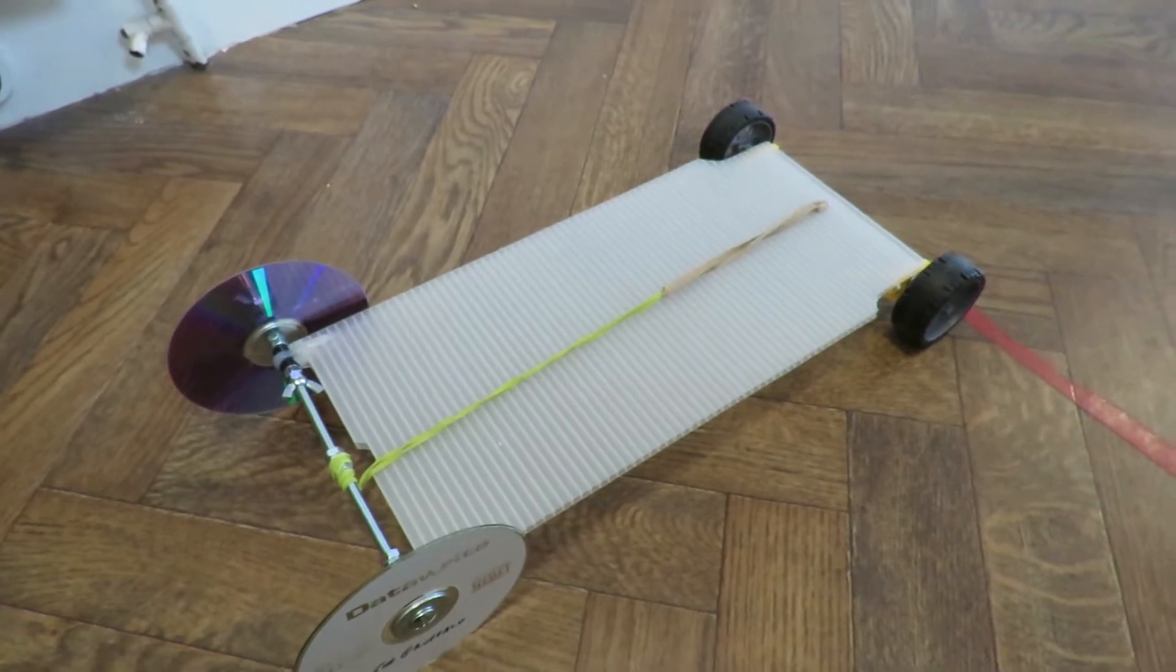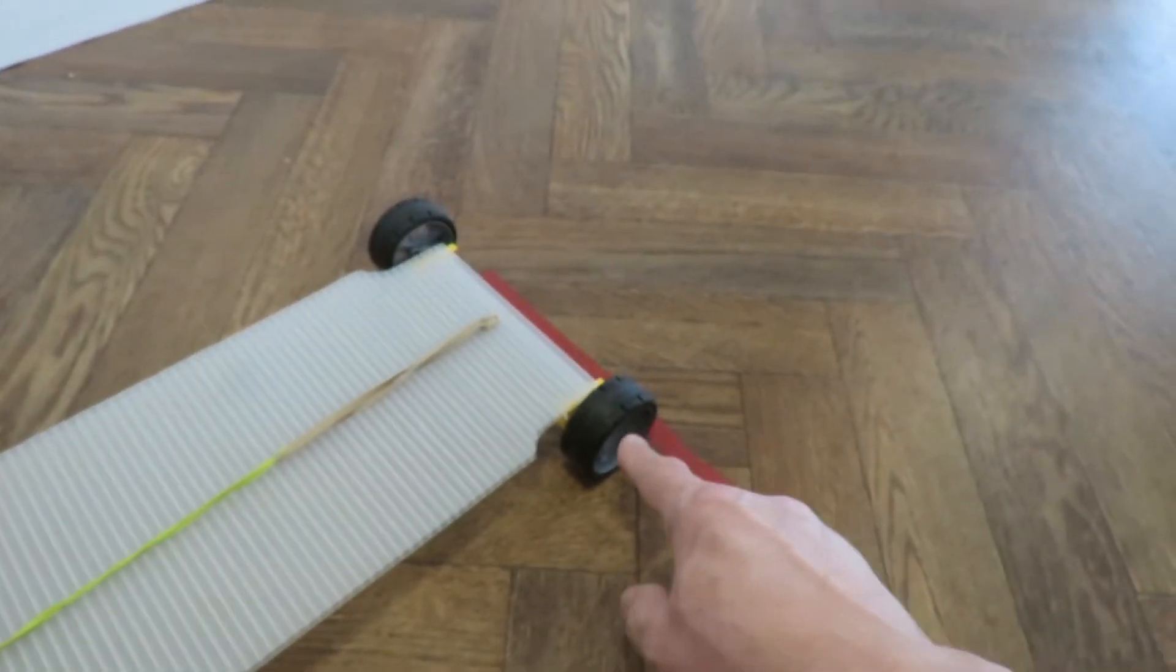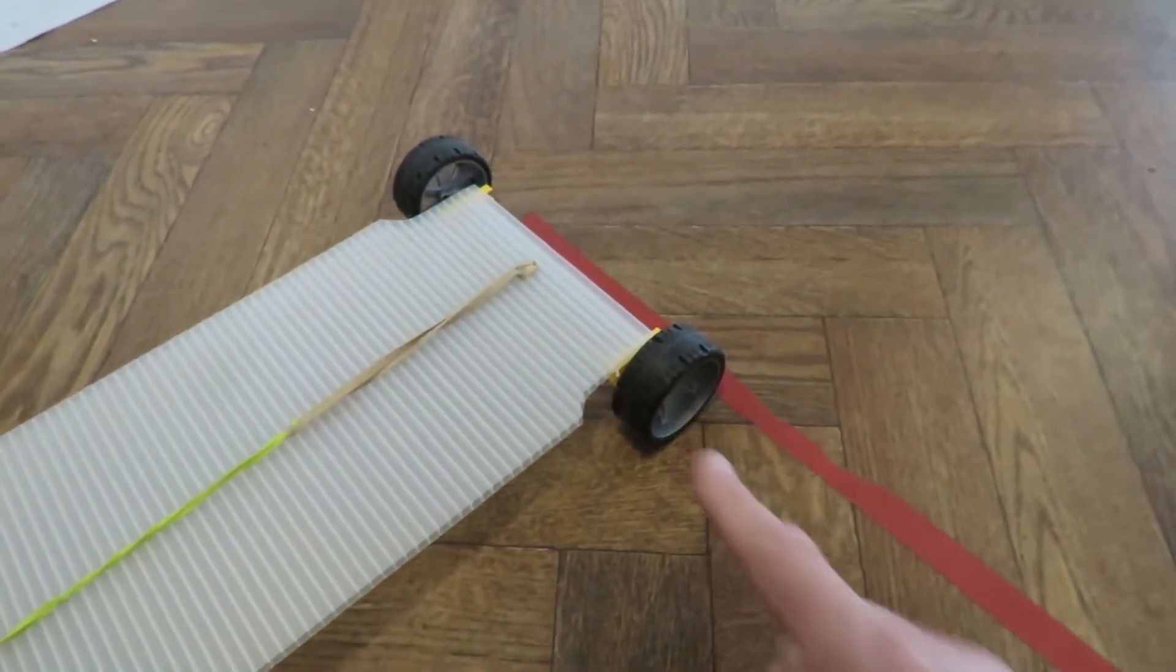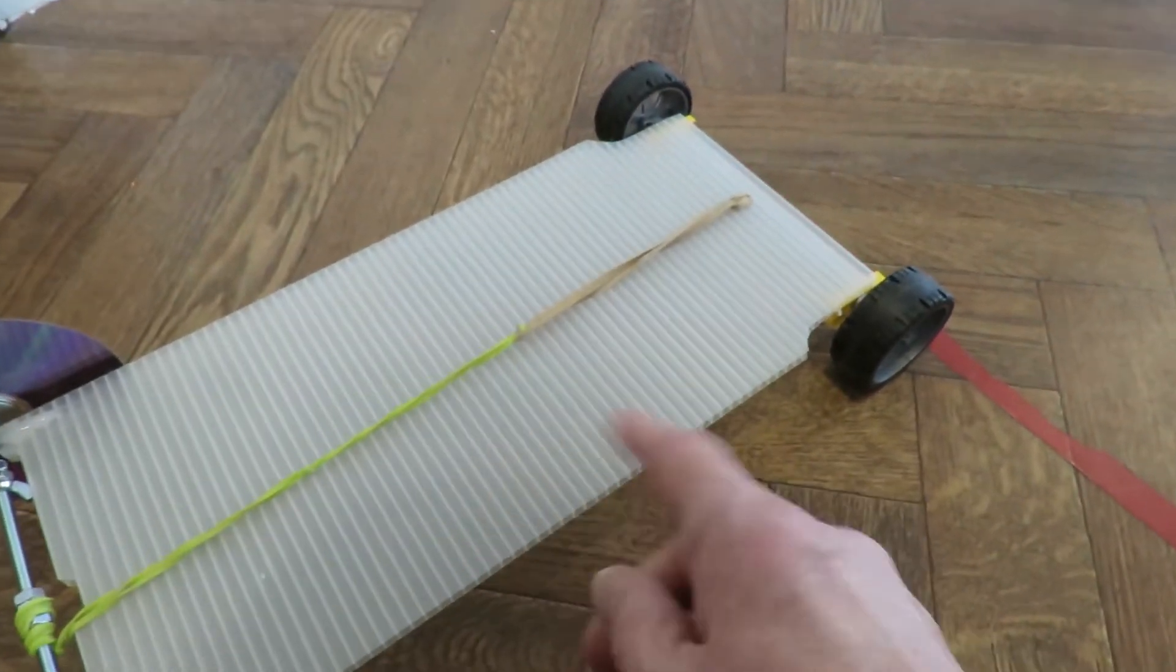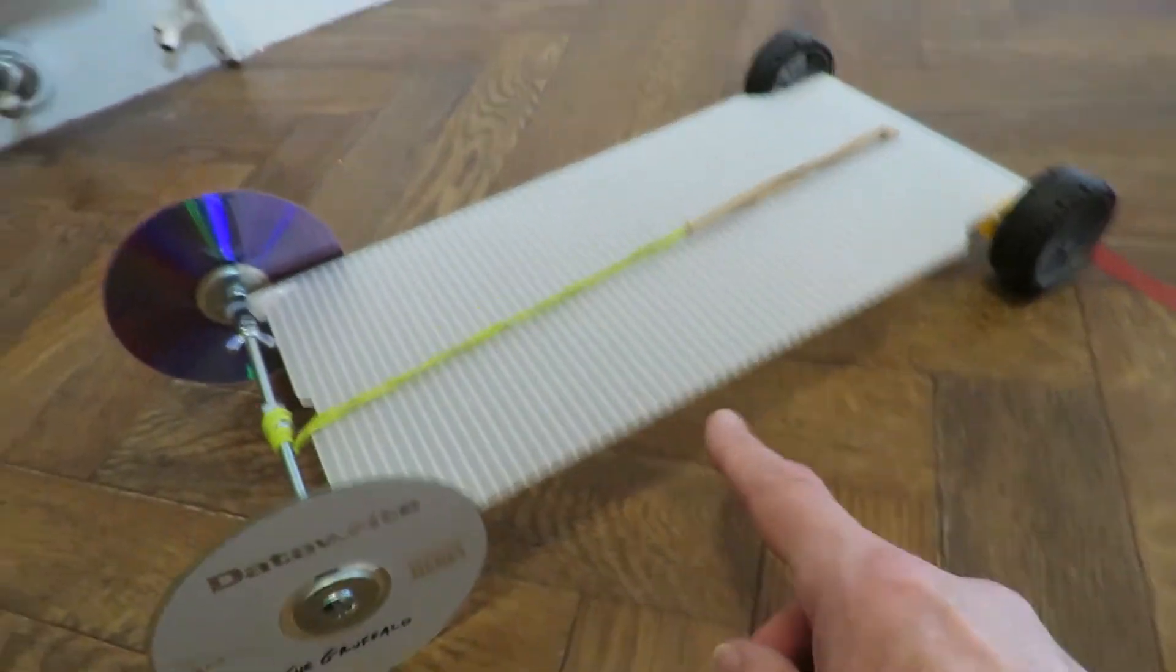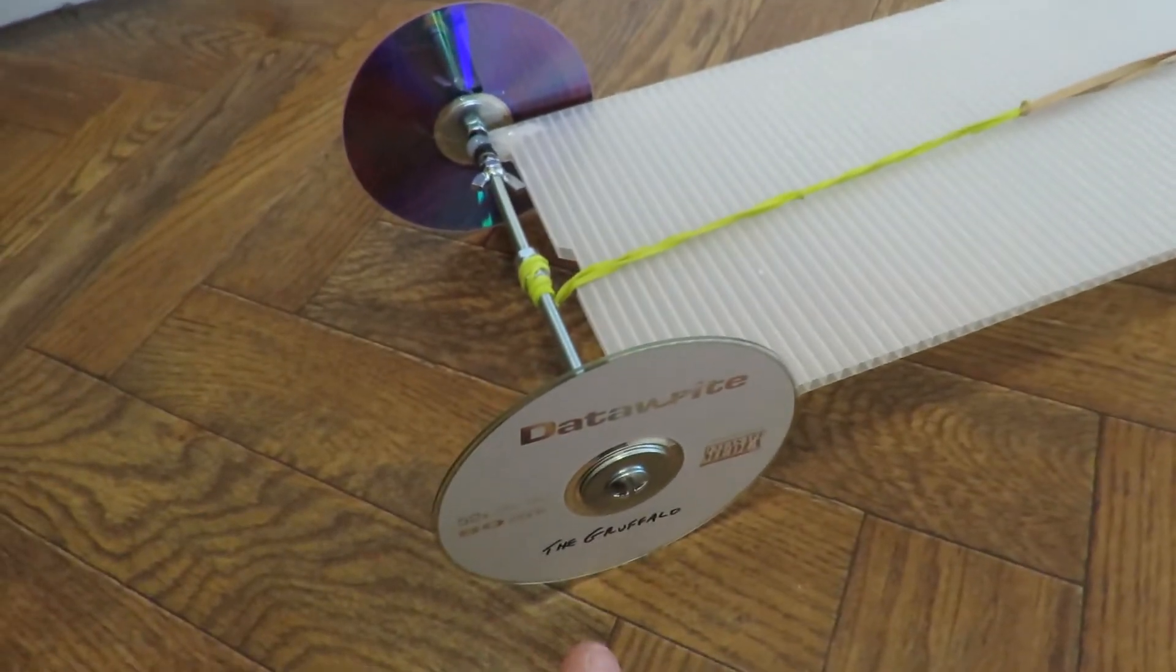I've just used odd bits and pieces. The wheels at the front are K'nex. It's just a bit of plastic. CD wheels.